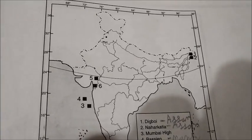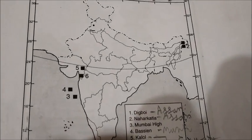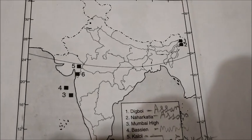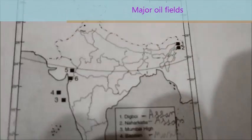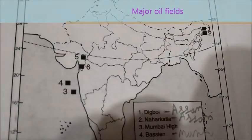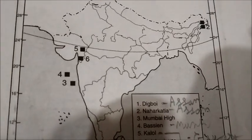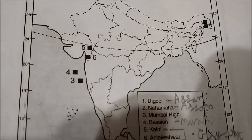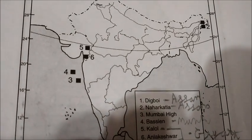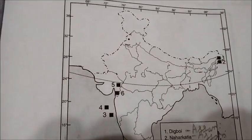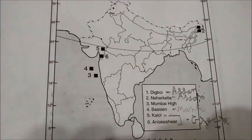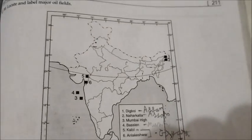Now let's look at the major oil fields. Digboi and Naharkatia are in Assam in the northeast. Mumbai High and Bassein are located a little away from Mumbai in the Arabian Sea. And Kalol and Ankleshwar are towards the end of Gujarat. These are the six oil fields you need to remember.